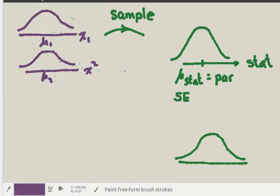In our case, the situation is that we've really got two populations with variables x1 and x2. We're interested in the mean of each distribution, and what we're studying is the difference in those two means. That's our population parameter that we want to study.